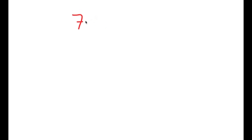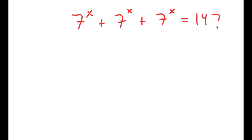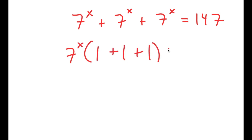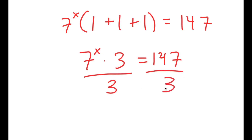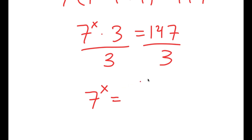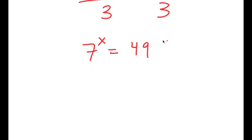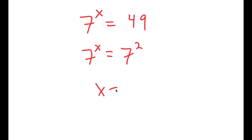Now I'm going to solve the equation 7 to the power of x plus 7 to the power of x plus 7 to the power of x is equal to 147. I'm going to factor out 7 to the power of x, so I get 7 to the power of x times 1 plus 1 plus 1 equals 147, which is 7 to the power of x times 3 equals 147. Dividing both sides by 3 gives 7 to the power of x equals 49. Since 49 equals 7 squared, I have 7 to the power of x equals 7 to the power of 2, meaning x equals 2.